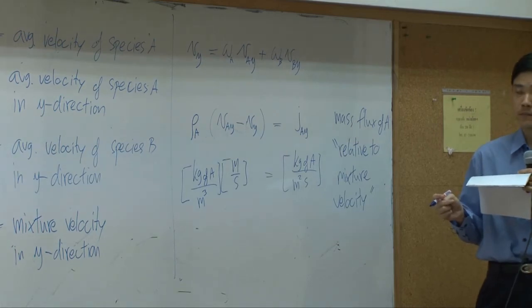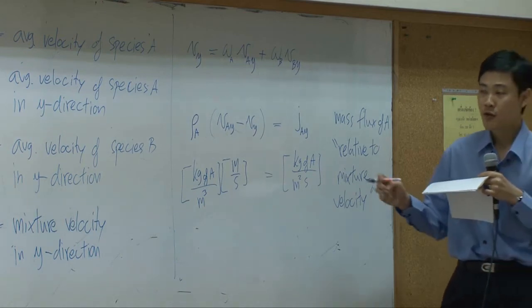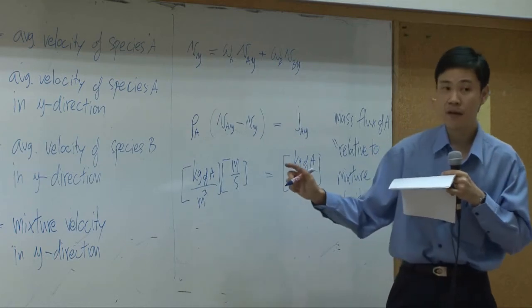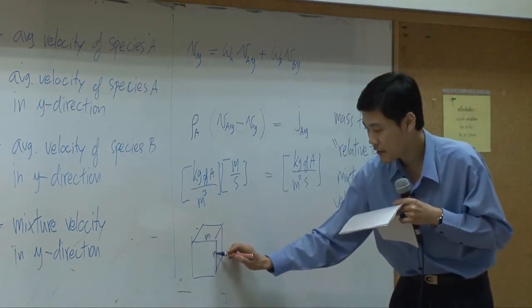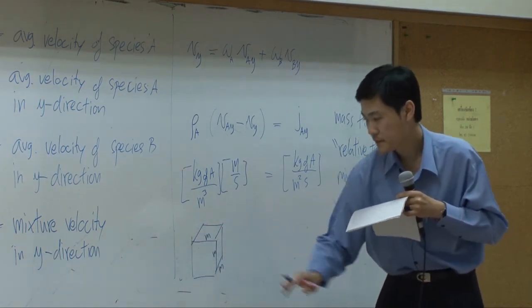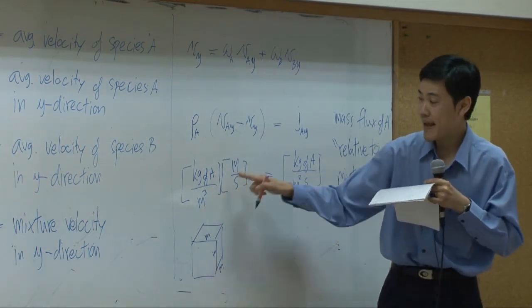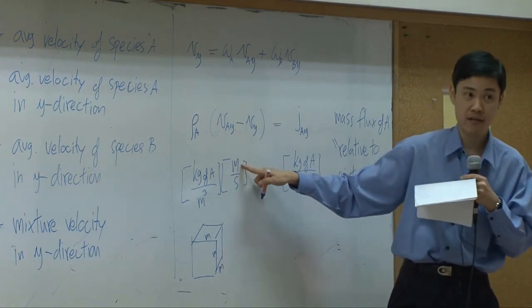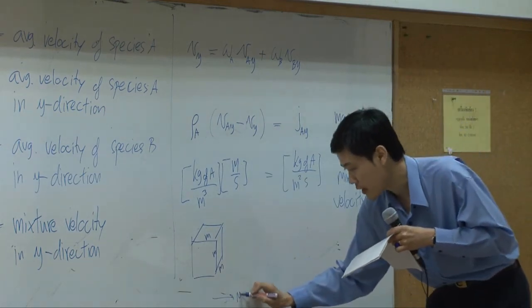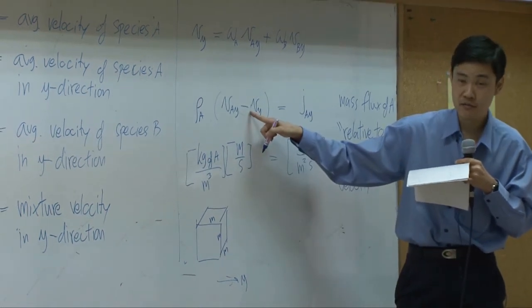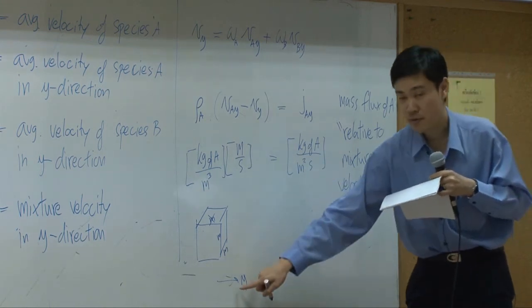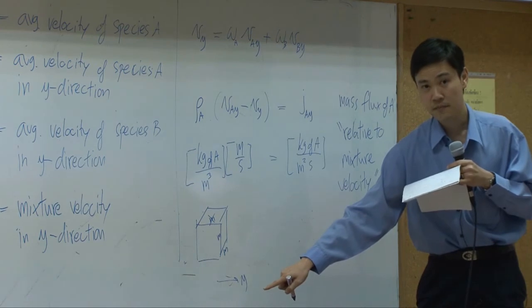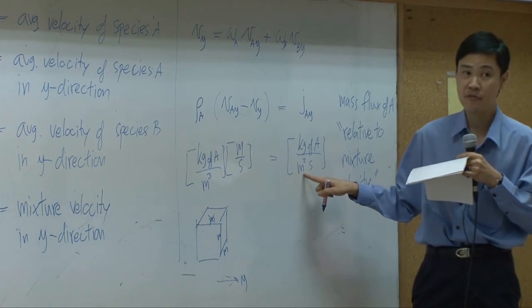You should notice this cubic meter here is a volume — meter in one direction, meter in another, and meter in the third. This cubic meter is cancelled with one meter, which is the meter in the y-direction. You cancel it out, so what you have would be square meters — which is perpendicular to the direction of your interest. That's why it's called mass flux: it's mass per area perpendicular to that direction.